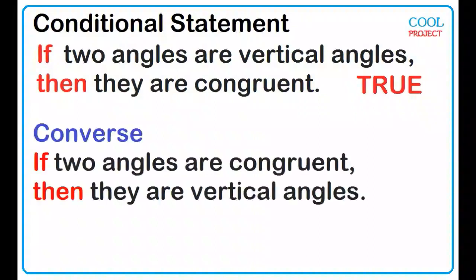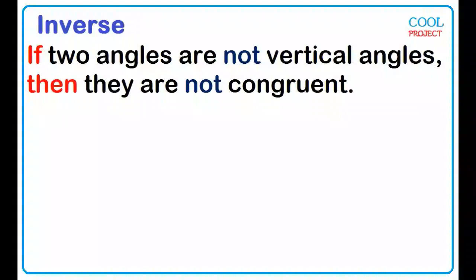Converse: If two angles are congruent, then they are vertical angles. True or false? False. Inverse: If two angles are not vertical angles, then they are not congruent. True or false? False.